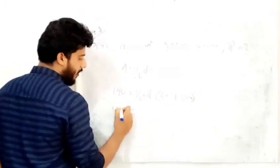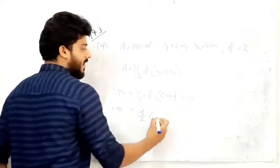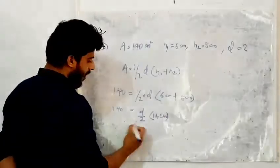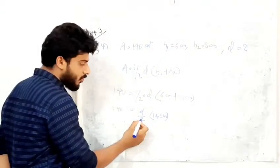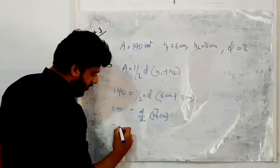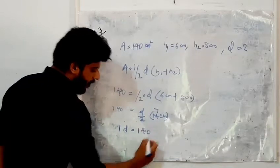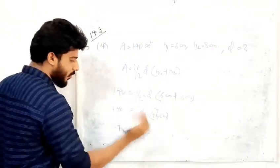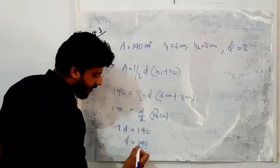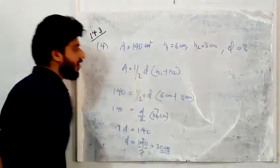So 140 = ½ × d × 14. Here 2 and 14 cancel giving 7, so 7d = 140, and d = 140 ÷ 7 = 20 cm. The length of the diagonal is 20 cm.